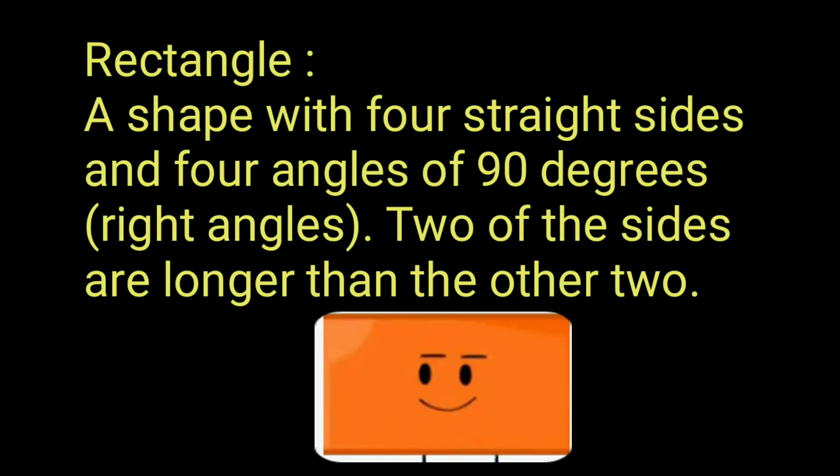Rectangle: A shape with four straight sides and four angles of 90 degrees, or right angles. Two of the sides are longer than the other two.